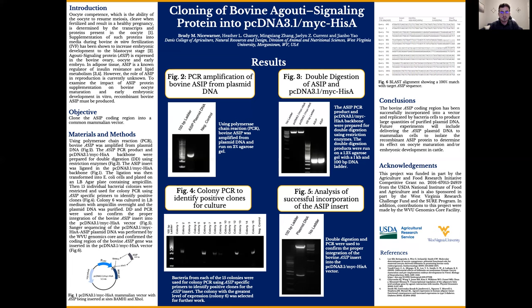Future experiments will include delivering the ASIP plasmid DNA to mammalian cells to isolate the recombinant ASIP protein and determine its effect on oocyte maturation and/or embryonic development in cattle.